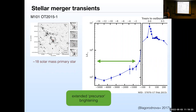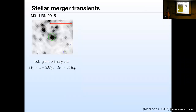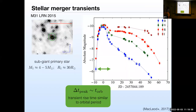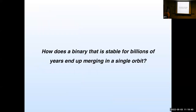All of these sources seem to show some sort of extended precursor brightening — they slowly brighten and then at the very end rise to their peak brightness on a timescale of order an orbital period. My question from this is: how does a binary that's been stable for a stellar evolutionary lifetime — millions or billions of years — end up merging in a single orbital period? The process of stellar evolution into contact should be very gradual, so what gives us this rapidity that makes these astronomical transients rather than something that takes a hundred thousand years?